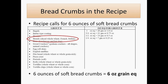Now for the last grain ingredient, the breadcrumbs. The recipe calls for 6 ounces of breadcrumbs. For soft breadcrumbs, we decide to use Group B in the grain chart. If it were dried breadcrumbs, you would look to Group A in the grain chart. Group B tells us that 1 ounce equals 1 ounce grain equivalent, so in this case 6 ounces of soft breadcrumbs equals 6 grain ounce equivalents for the whole recipe.